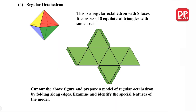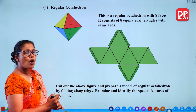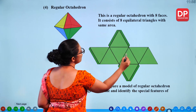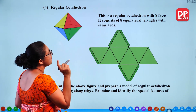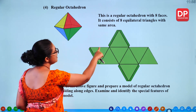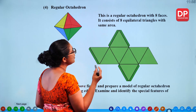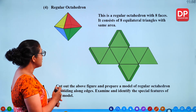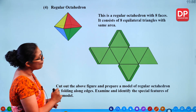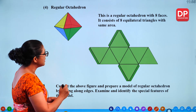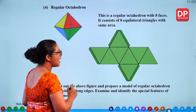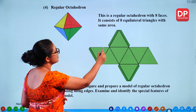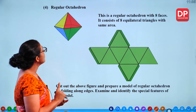Now we will look at the regular octahedron. Octa means 8, so there are 8 sides. It is made from 8 equilateral triangles — all sides equal, so it's regular. You can cut out and fold the net to create a model. We'll examine the vertices, edges and faces of a regular octahedron.